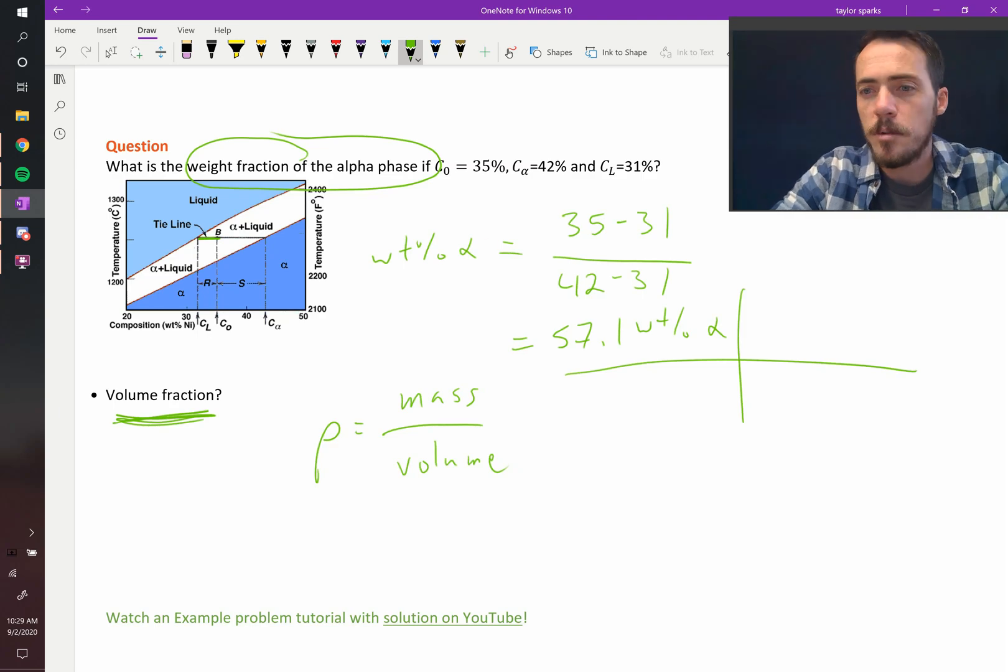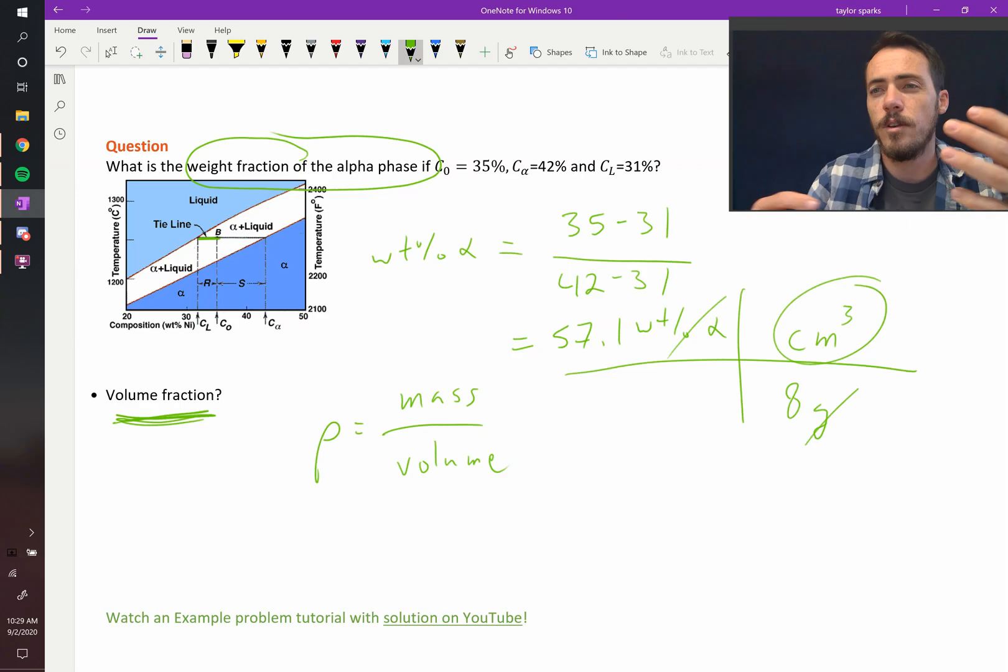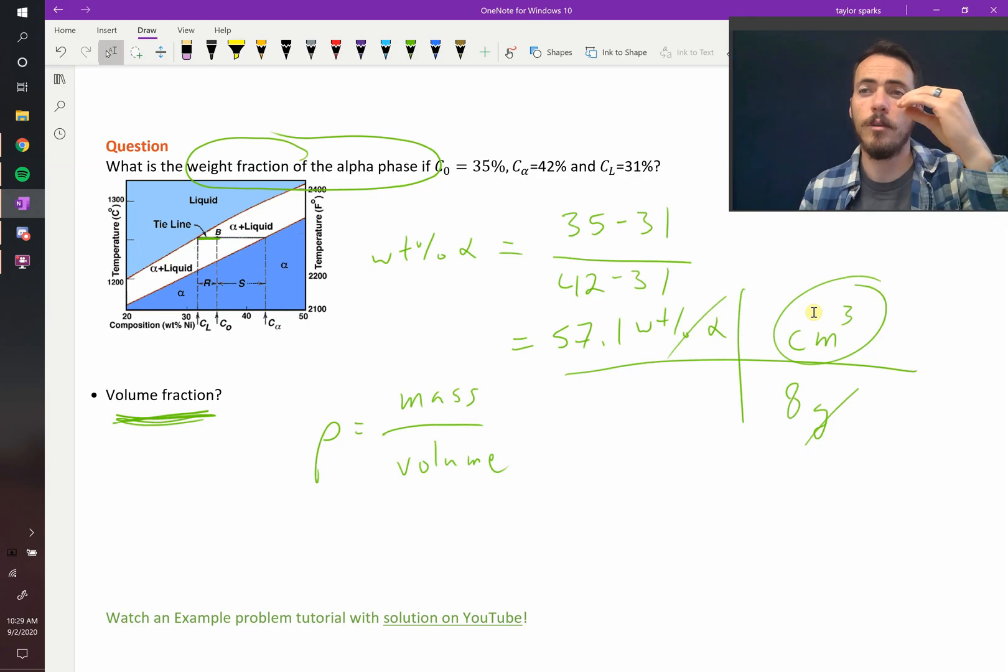So if you took this weight percent right here and you divided it by its density, let's say that it had like 8 grams per cc, 8 grams per cubic centimeter. All of a sudden the weight would cancel out and you'd be left with a volume. So you could figure out the volume fraction. That would give you the volume of one phase. You would do it with the other phase as well. Figure out its volume. And then divide the volume of one phase by the total volume of both phases and you have the volume fraction.